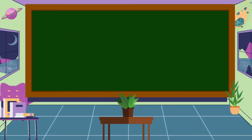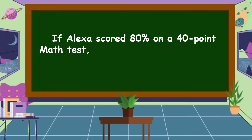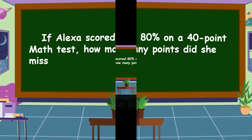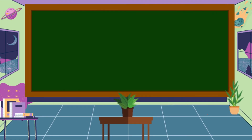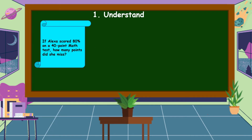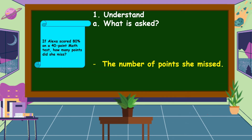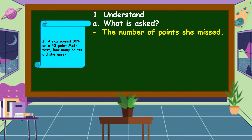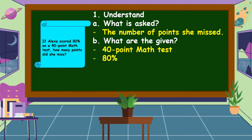Our next problem is an example of a non-routine problem. If Alexa scored 80% on a 40-point math test, how many points did she miss? To answer this problem, we're going to use the four-step plan. First, we understand the problem — what is asked? It is asking for the number of points she missed. The given facts are a 40-point math test and 80%.